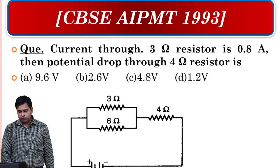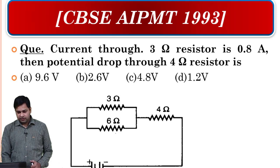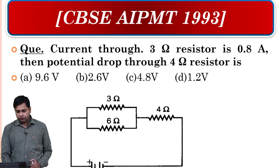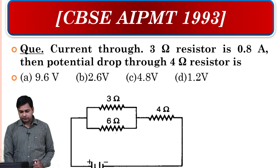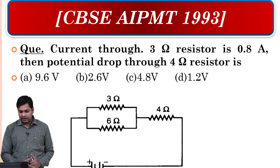This is the second number question. It states that current through 3-ohm resistor is 0.8 ampere, then the potential drop through the 4-ohm resistor will be given by. Now look, when we learned this problem, I told you about current division rule, and that with the help of current division rule you can easily find the answer.